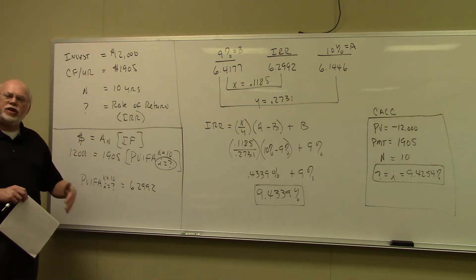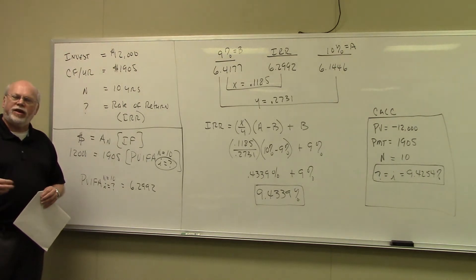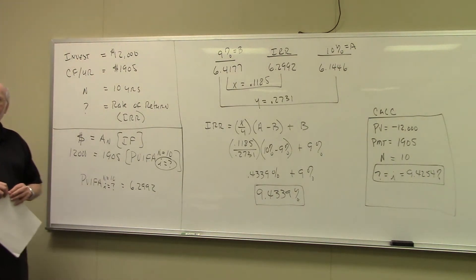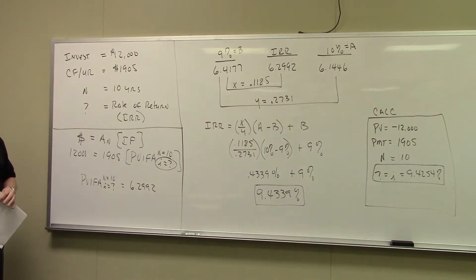In this video, Dan, this is a continuation of the previous video which is going to show us how to calculate a rate of return on the investment. You'll recall that this is an investment that's $12,000. From that investment, we're going to get $1,905 every year for 10 years.